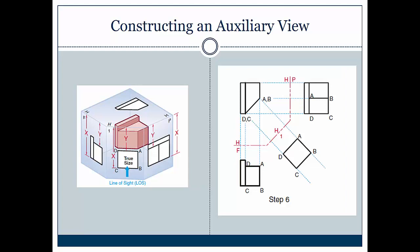Notice that we follow these steps whenever we're doing any views in our multi-view drawings. The last step, step 6, is to complete the auxiliary view details. In this case, we would bind everything together to get our true size for ABCD.